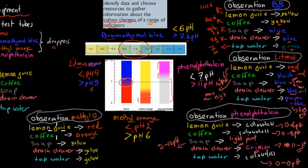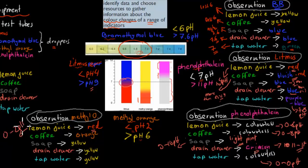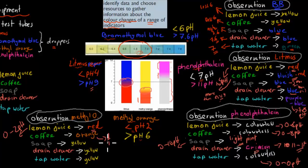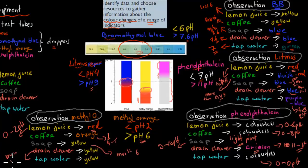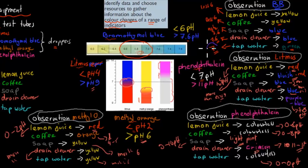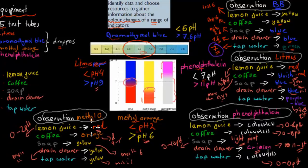For methyl orange, lemon juice turned red — a pH of 2 or less — so lemon juice has a pH of 0 to 2 using this indicator. Coffee turned orange, which gives a pH of around 4 to 5. Soap was yellow, meaning a pH higher than 6. Drain cleaner was also yellow, so more than 6 as well. Using all of these indicators, we can figure out the range of substances and get our best estimates.